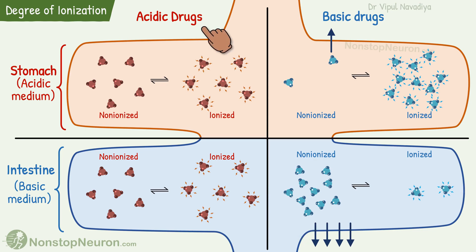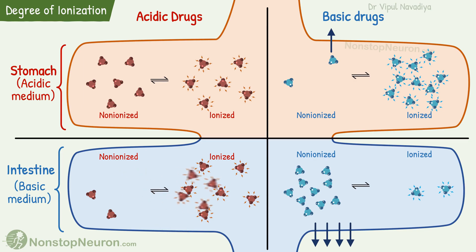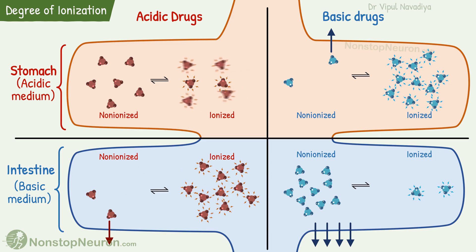Now let's talk about acidic drugs. In the intestine, due to the basic environment, the acidic drug largely gets converted into an ionized form. So the portion available for absorption is small. On the other hand, in the stomach, due to an acidic medium, these drugs largely get converted to a non-ionized form. So the portion available for absorption is large.